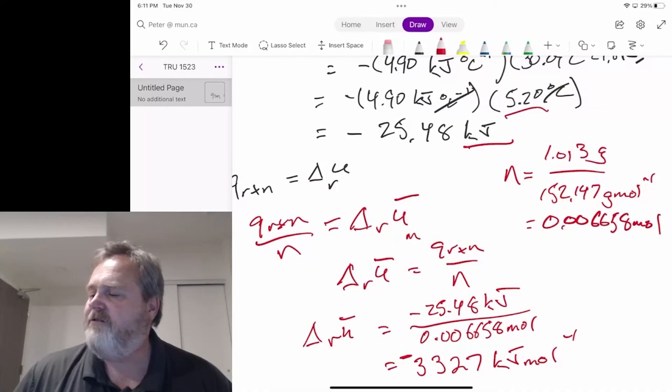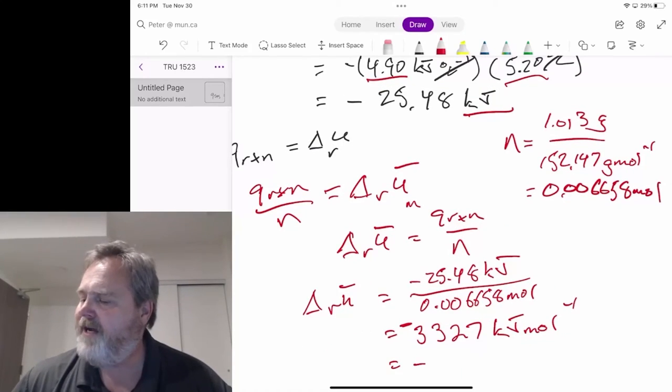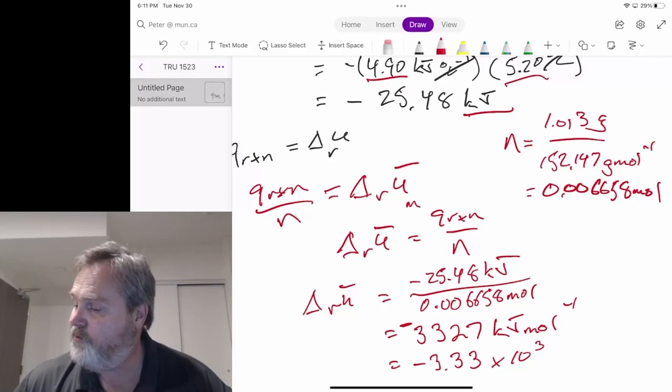Now, if we want to go by sig figs, we saw three sig figs here, three sig figs here. So really, we should say this is probably minus 3.33 times 10 to the 1, 2, 3 kilojoules per mole.